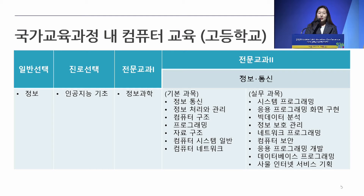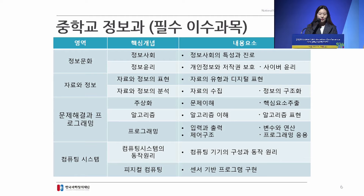In the high school curriculum, there is a subject called career path elective course, which is what general high school students learn. There is also a specialized course — for example, subjects related to computer called information science, customized to the students. Students also learn computer-related subjects like computation, though such subjects are primarily for students who would like to get a job after graduating from high school.